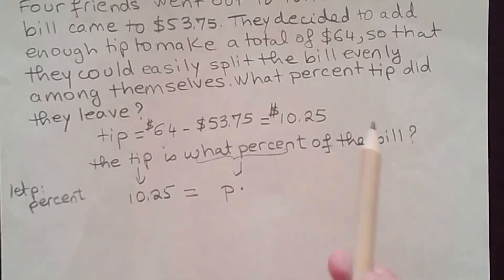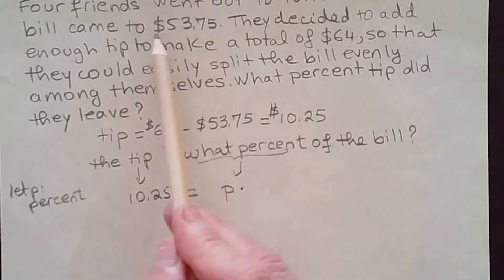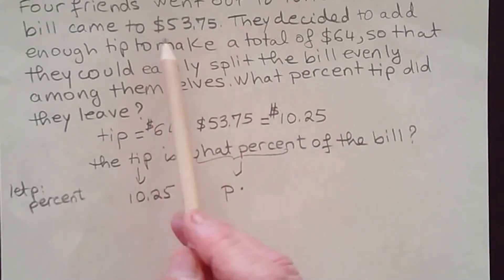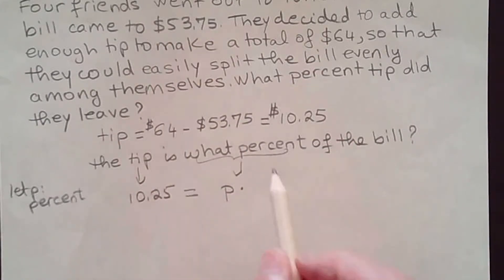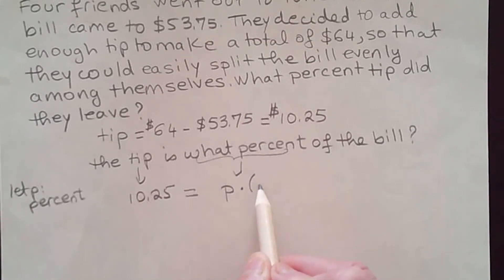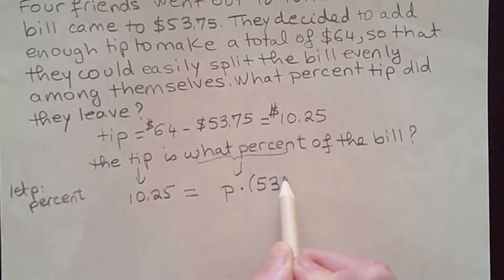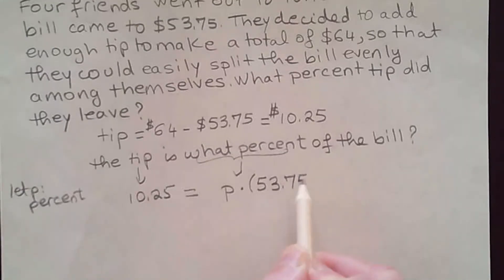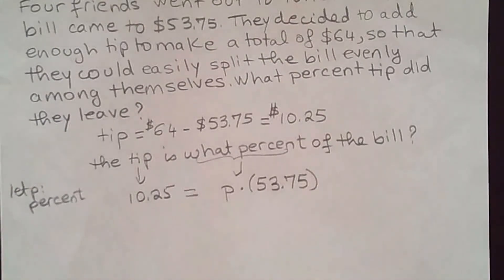The bill is $53.75 — this is how much it came out to. Since I have a decimal in there, I'm going to put parentheses in here so you won't confuse it with the times sign. So the equation is: 10.25 equals p times 53.75.